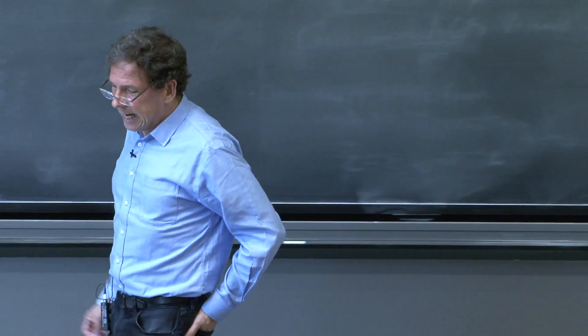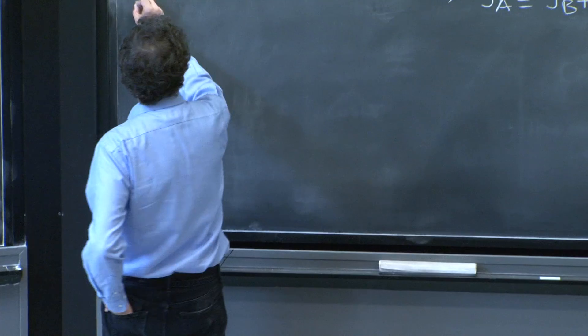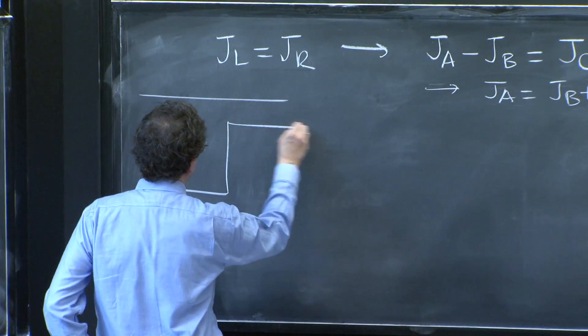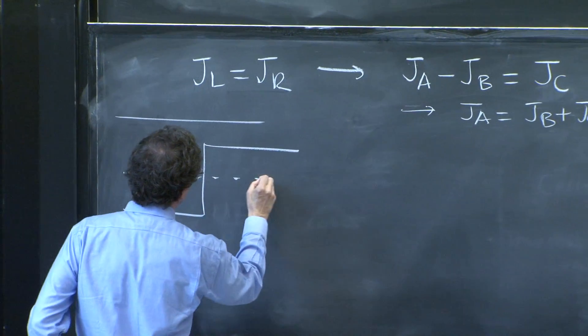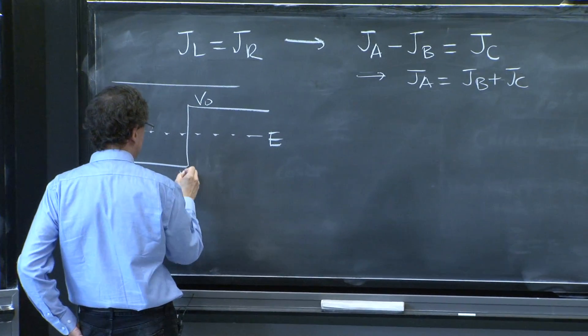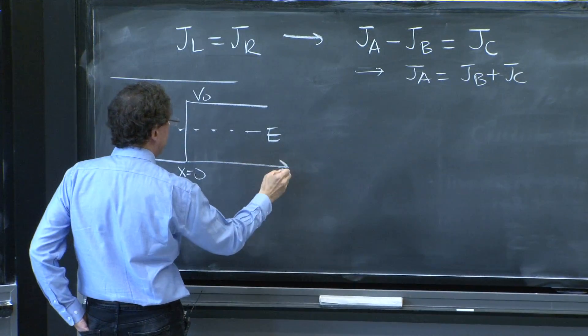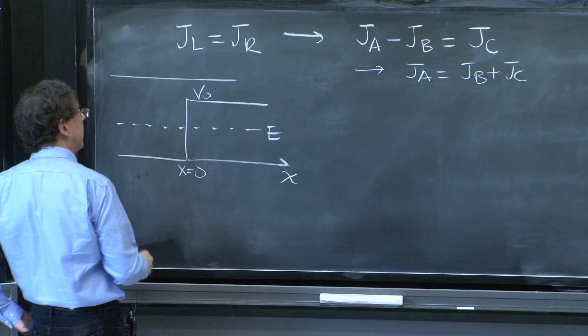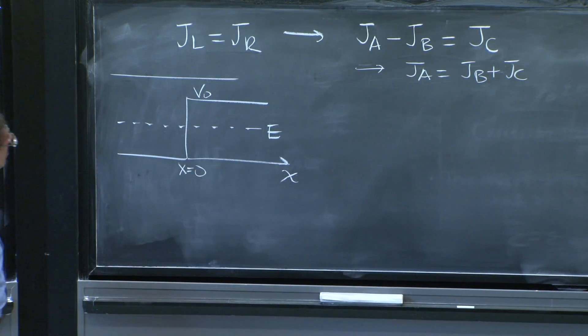Let's do e less than v0. So we're back here. And now, the energy e is here, v0 is here. This is x equals 0, x-axis. And that's the situation.